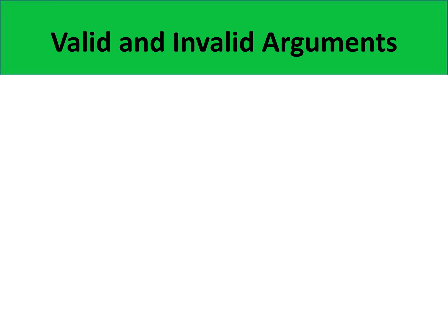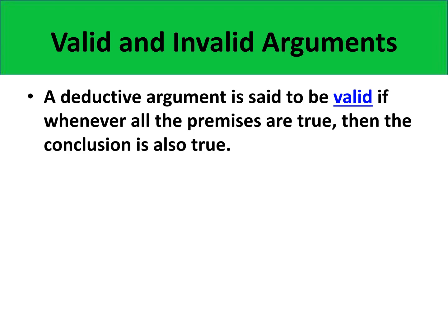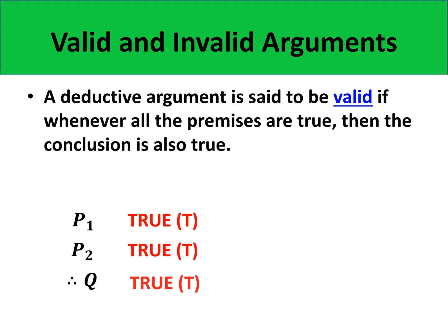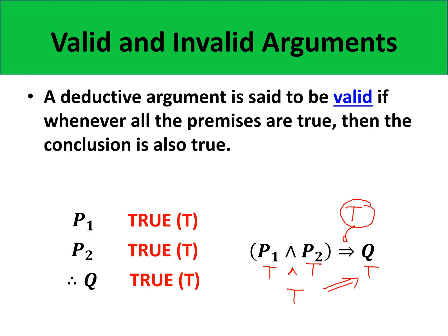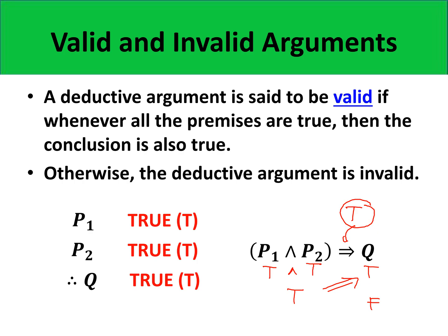To evaluate if a deductive argument is valid, we have to show that whenever all the premises are true, then the conclusion is also true. In symbols, we write this as the conjunction of the premises P1 and P2 implies Q. If P1 is true and P2 is true, their conjunction is true. For the implication to be correct, the conclusion must be true so that T implies T is true. Because if Q is false, T implies F would be false, and in that case the deductive argument is invalid.